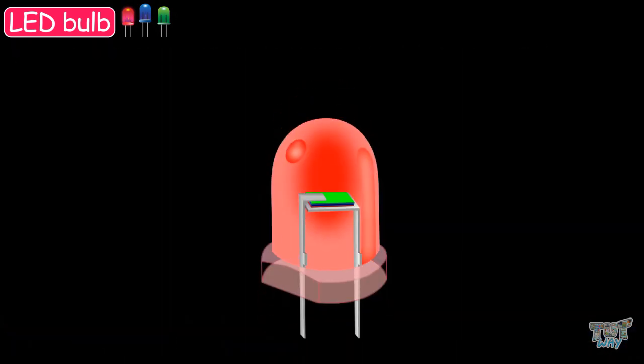This is a simple diagram of the LED. It consists of a positive and negative electrode connected to a semiconductor material chip attached to them.